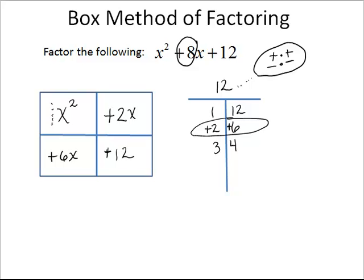Now that we've done that — which was probably the hardest part — all that's left is to factor out the greatest common factor from each of the rows and columns. Looking at the rows first: we have x squared plus 2x, and we factor out just an x, since that is the only thing they have in common. In the second row, we've got plus 6x and plus 12. We can't factor out an x term, but we can factor out the GCF, which is 6. So I'm going to write plus 6 here.